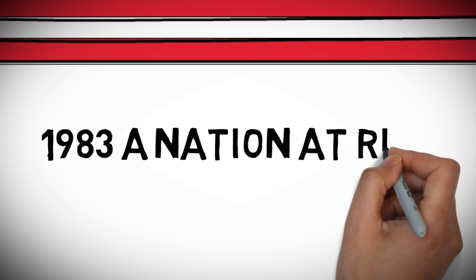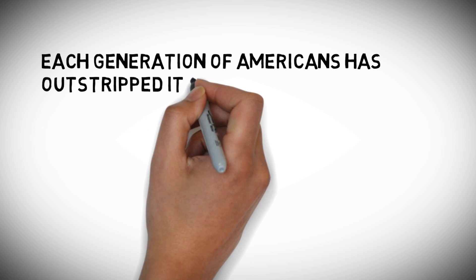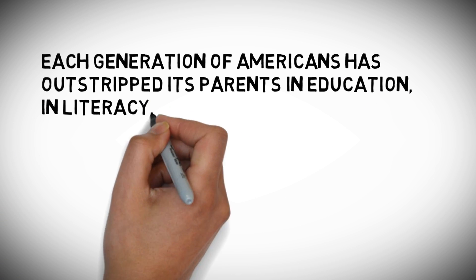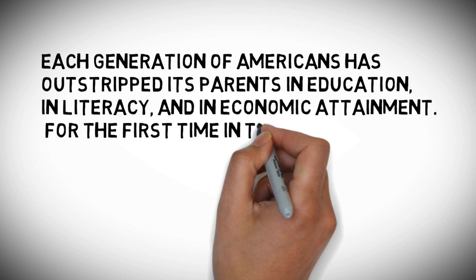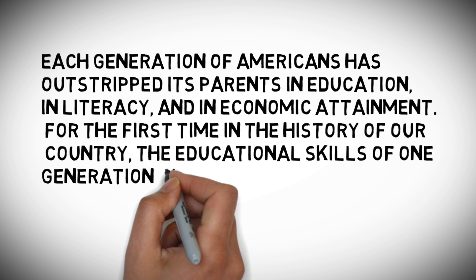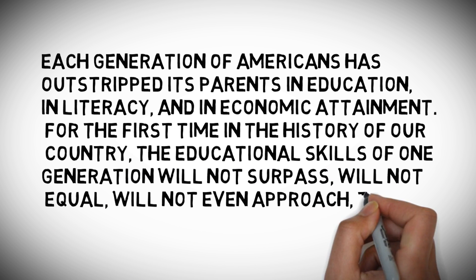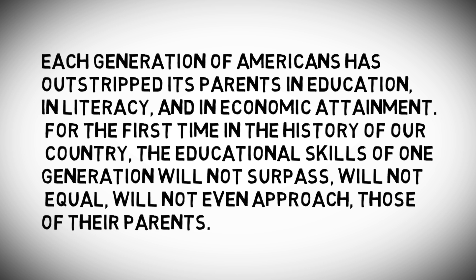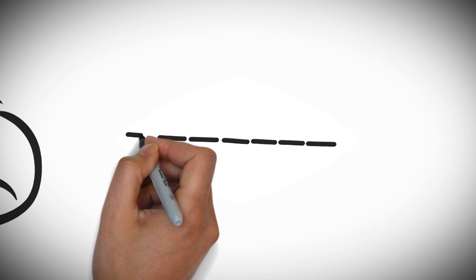In 1983, a Nation at Risk report was published. This report said: each generation of Americans has outstripped its parents in education, in literacy, and economic attainment. For the first time in the history of our country, the educational skills of one generation will not surpass, will not equal, and will not even approach those of their parents. It was definitely time for some change.